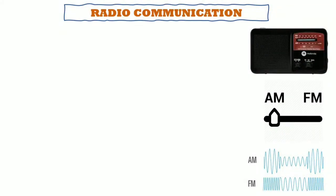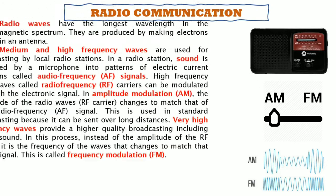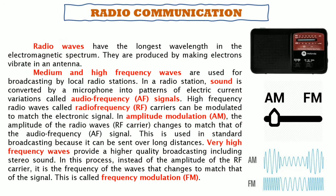The first topic is radio communication. All of us know what radio is. We have here an image of a radio and also an image of AM and FM. Radio waves have the longest wavelength in the electromagnetic spectrum. They are produced by making electrons vibrate in an antenna. Medium and high frequency waves are used for broadcasting by local radio stations.